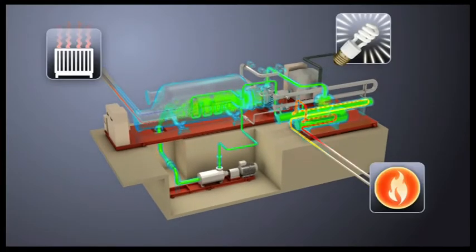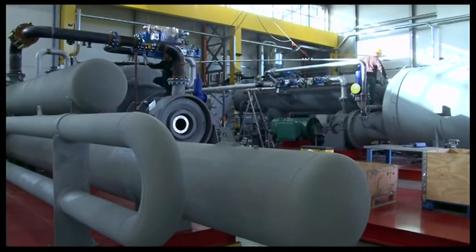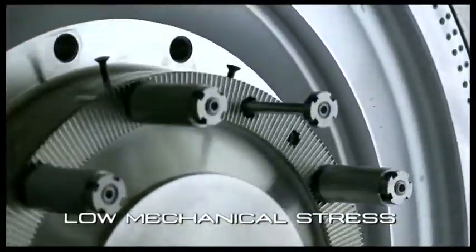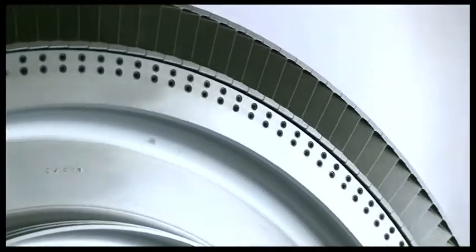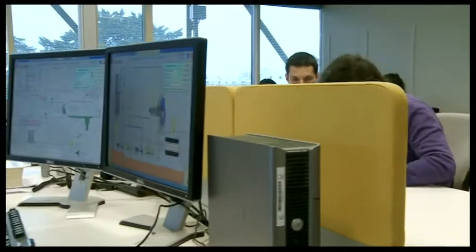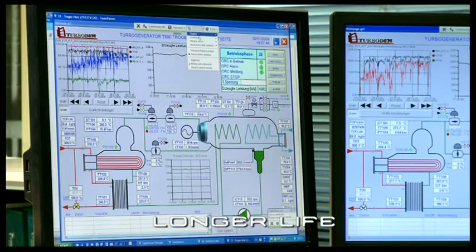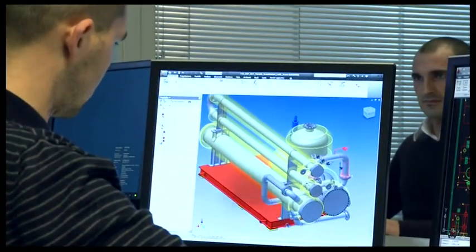Aside from high cycle efficiency, the ORC system has many other significant advantages. Low mechanical stress of the turbine due to low peripheral speed. Low turbine RPM allows the direct drive of the electric generator without a speed reduction unit. The absence of vapor humidity guarantees a longer life for the turbine and independent functioning with no on-site operator required.